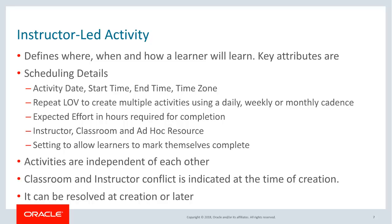The activity has an expected effort in hours required for completion. Other important attributes are instructor, classroom, and ad-hoc resources like stationery or meals that could be required during the classroom activity. The activities inside the offering are independent of each other. At the time of creating the activities there could be classroom and instructor conflicts, which are shown with a warning sign. The conflict can be resolved at the time of creation or at a later time.